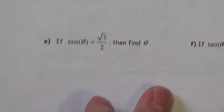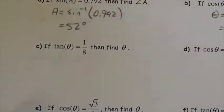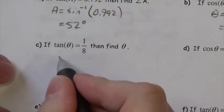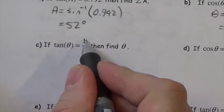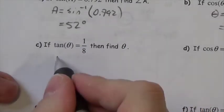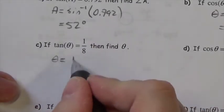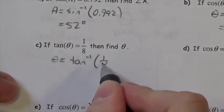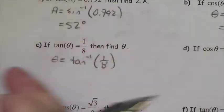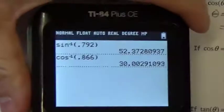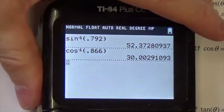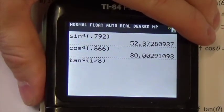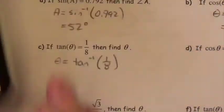If the tangent of theta is equal to 1.8, find theta. Same sort of thing — this is the opposite divided by the adjacent. So to get theta by itself, I would do the inverse tangent of 1.8, the opposite of the tangent on that ratio. Second tangent, 1 divided by 8... let me get 7.12, or just 7 degrees.